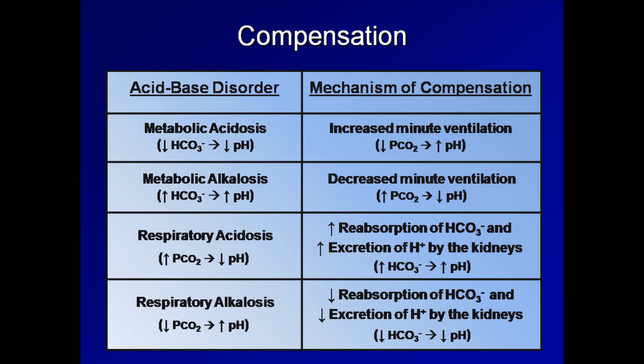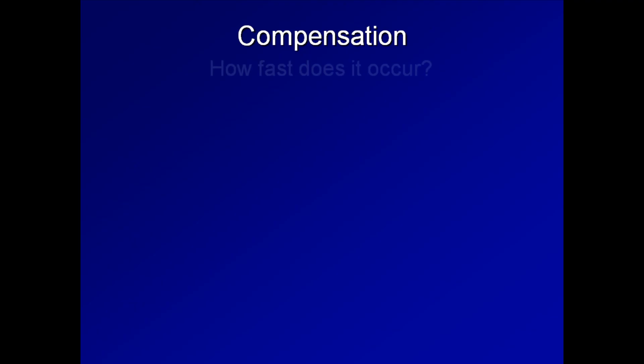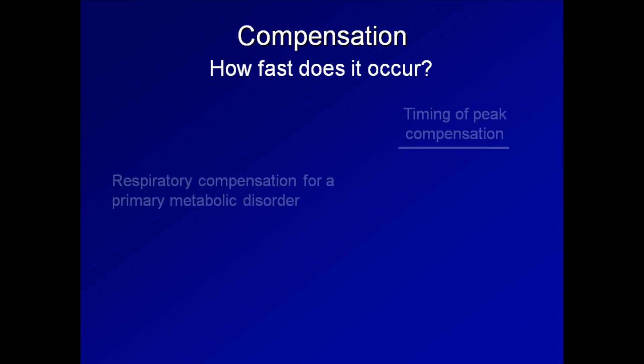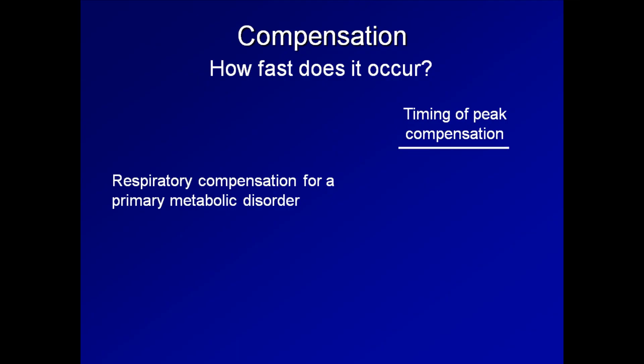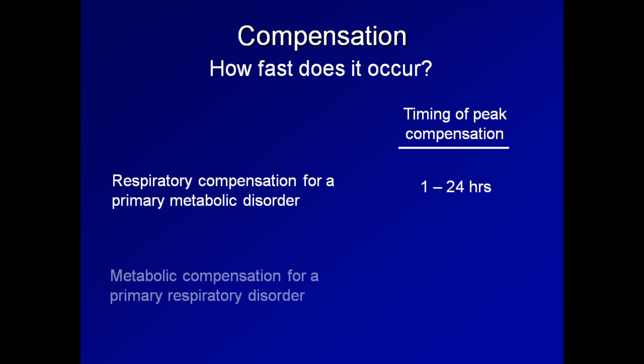Before moving on, there are two aspects of compensation to quickly mention. First, the speed with which compensation develops is very important. Respiratory compensation for a primary metabolic disorder is measurable within minutes, but may take up to 24 hours to be maximally stimulated. Metabolic compensation for a primary respiratory disorder takes longer — estimates range from 12 hours to five days. This time delay is largely estimated from observations in healthy volunteers and may not strictly apply to critically ill patients.